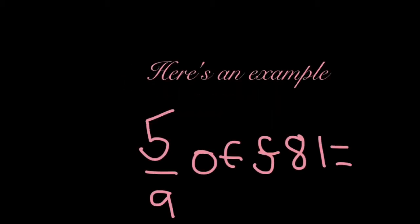In fractions of amounts, you divide your number by the denominator, then times it by your numerator. Here's an example: five-ninths of 81 pounds.